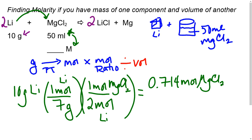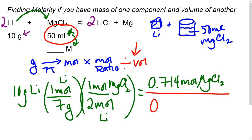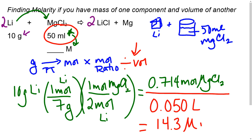Now the final step: divide by the volume. The volume given is 50 milliliters, but remember molarity requires liters, so we move the decimal point over to get 0.05 liters and divide. We end up with a molarity of 14.3 M MgCl₂. Remember to write capital M for molarity and identify the component.